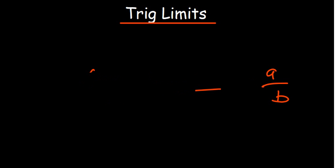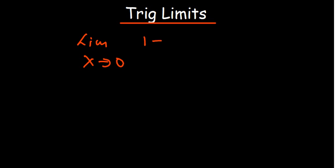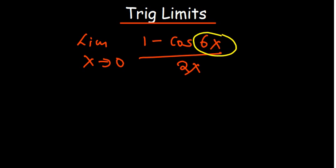Now let's consider an example with the cosine function. Find the limit as X approaches zero of one minus cosine 6X over 2X. We recall the identity: what is attached to the cosine function should equal the denominator. Observing what we have, the argument is 6X but the denominator is 2X — these are not equal, so we need to make them match.